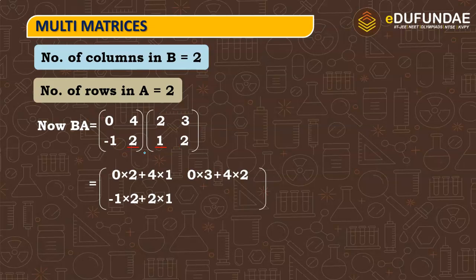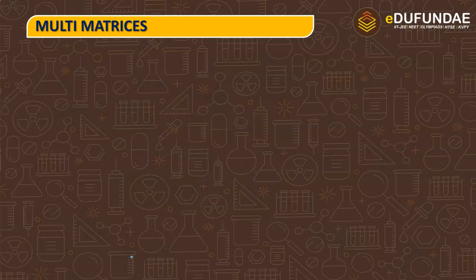Similarly, minus 1 into 3 plus 2 into 2. So, after solving it further, we will get 4 into 1, 4, 4 into 8, 2 into 1, 2 or minus 2, that will be equal to 0, then 2 into 4 minus 3, 1. So, this is BA.